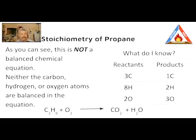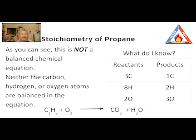Now, what do I know? For the reactants, carbon is found only in the propane and there are three carbons. On the products, carbon is found in carbon dioxide and there's only one. Three carbons and one carbon — the carbons are not balanced. For the reactants, I find hydrogen in the propane molecule and there are eight. On the products, I find hydrogen in the water molecule and there are only two — hydrogen is not balanced. For oxygen, that's found only in the oxygen molecule on the reactant side, of which there are two. On the product side, oxygen atoms are found: two in the carbon dioxide molecule and one in the water molecule, for a total of three. This is not a balanced equation at all — neither the carbon, hydrogen, nor oxygen atoms are balanced.